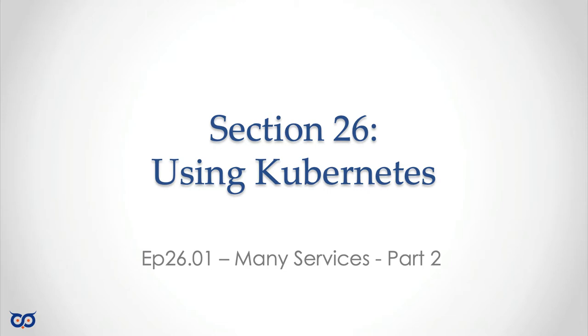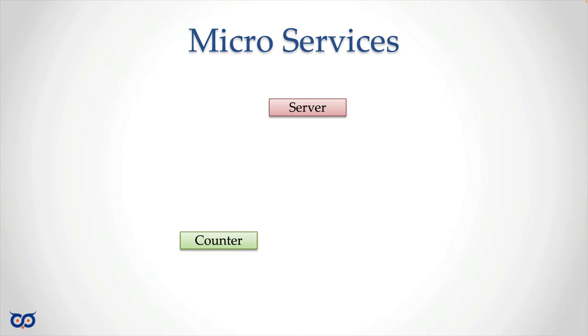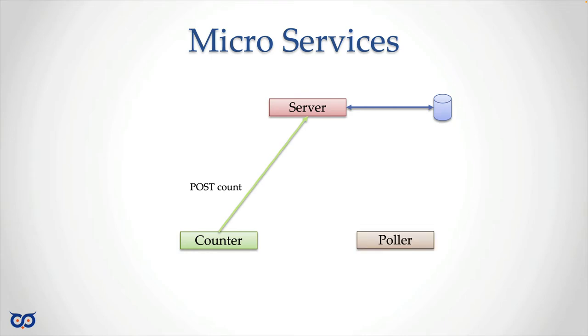Hello, good day and welcome to Go on the Run. Today we're going to continue with using Kubernetes in section 26, part two of episode 01, which is about handling many services. In part one I showed a diagram: we have multiple microservices — a counter that generates values, a server that stores or persists them, and a puller that randomly pulls values from the server.